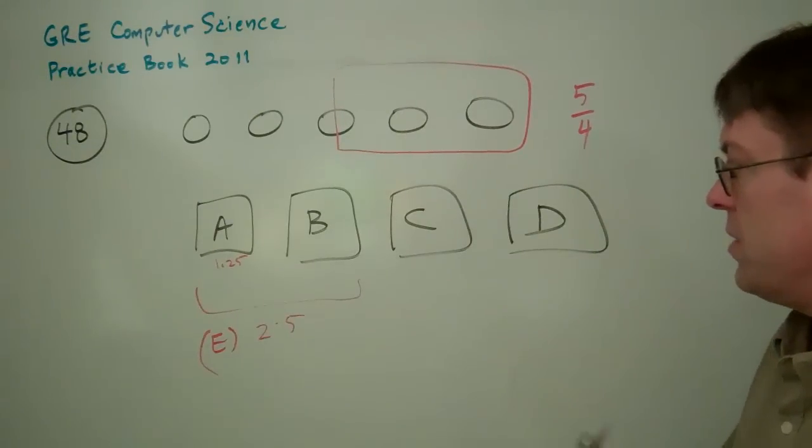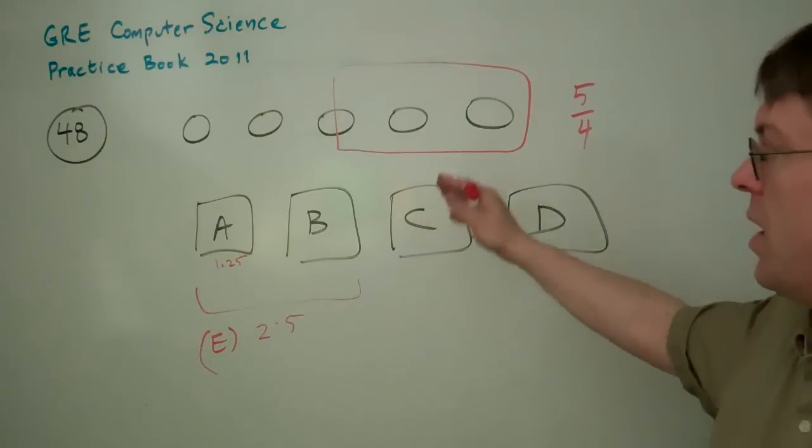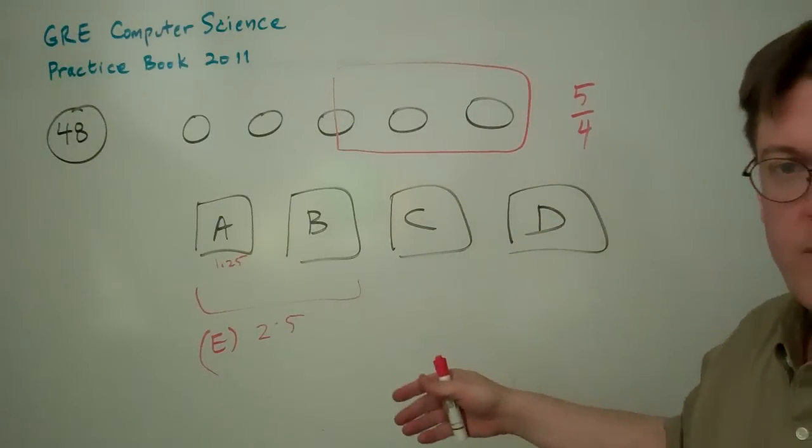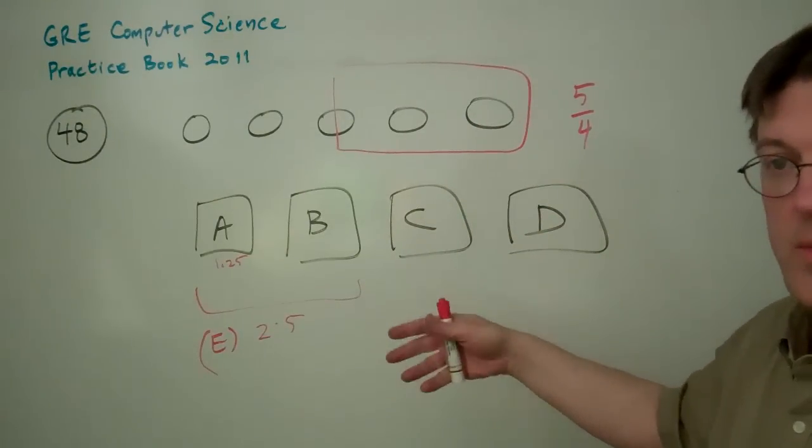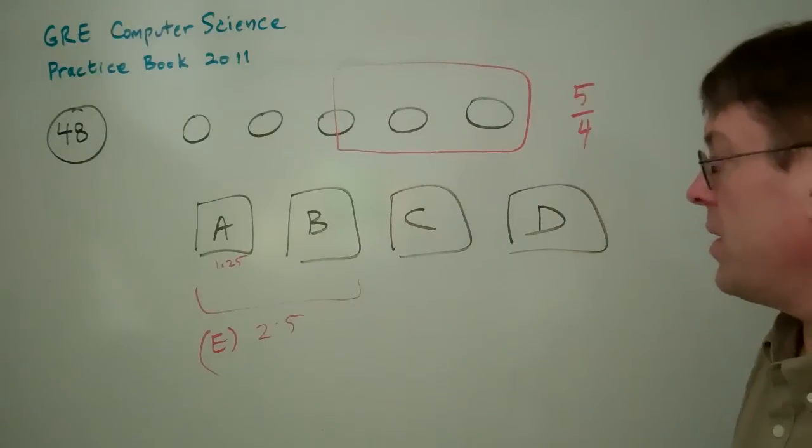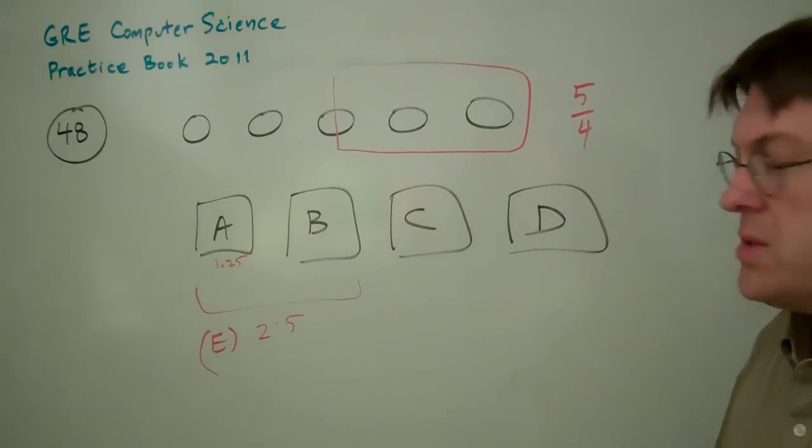There's a difference between the probability of a given ball going in a box versus the expected value, the expected amount of balls in a given box. Maybe that's how people misinterpreted that.